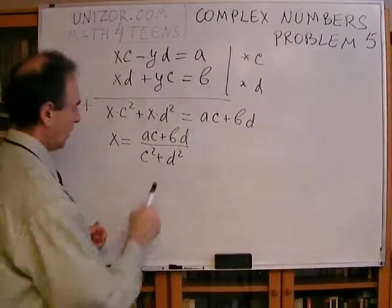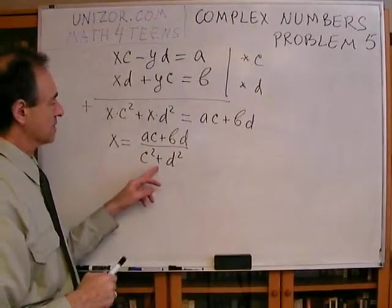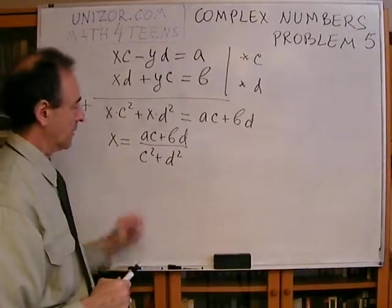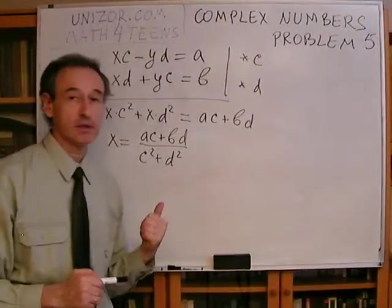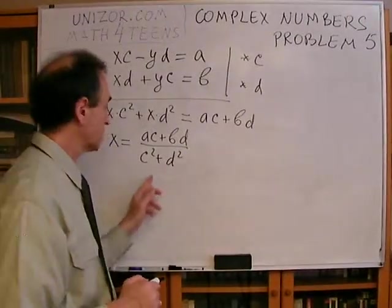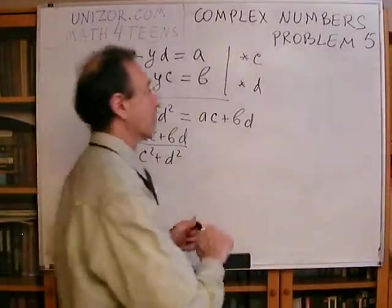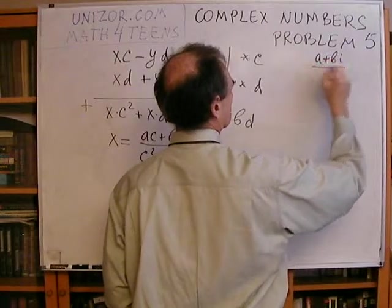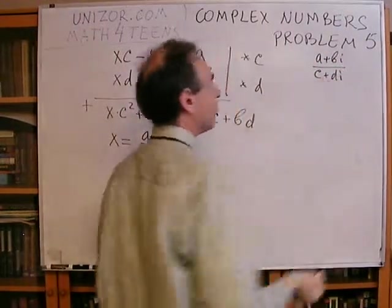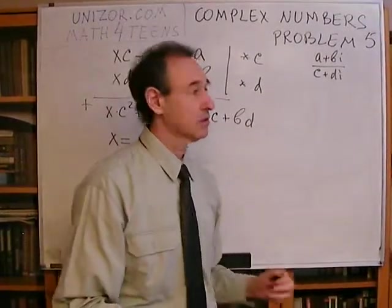What's interesting, by the way, obviously, any kind of a fraction does not exist when denominator is equal to zero, and this particular denominator is equal to zero when both C and D are equal to zero, which means, in our original example, A plus B I divided by C plus D I, if C and D both are equal to zero, it means we divide by zero, which is no-no, right?